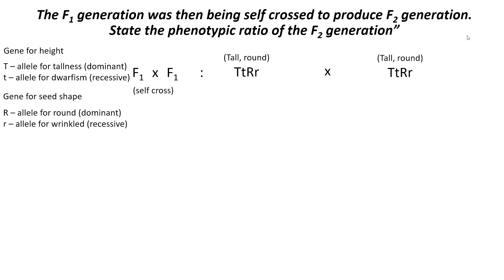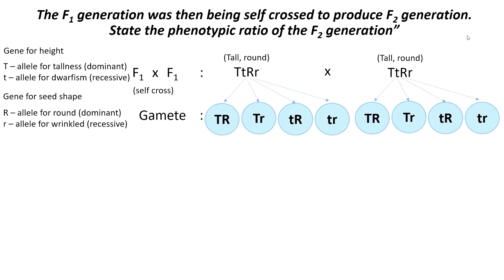Since the two genes are located on different chromosomes, independent assortment will act on these two genes, resulting in the production of four types of gametes by these heterozygous individuals — big T big R, big T small r, small t big R, and small t small r.